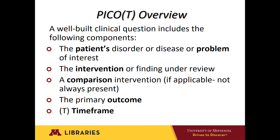A well-built clinical question includes the following components. The patient or population's disorder, disease, or problem of interest — who or what is the question about? This may include the primary problem, disease, or circumstances. Sometimes the sex, age, or race of a patient might be relevant to the diagnosis or treatment of a disease. Intervention or finding under review: what main intervention or treatment is under consideration? What factor may influence the prognosis of the patient, such as age or comorbidities? What was the patient exposed to?